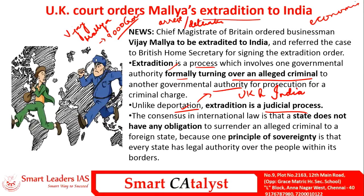Under the code of international law, there is a consensus that no country has any obligation to surrender an alleged criminal. This is because every country has its own sovereignty and with that sovereignty, its own legal authority to adjudicate crimes in its land. Because of this principle of sovereignty, the extradition of Vijay Mallya took more than four years.